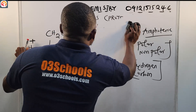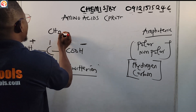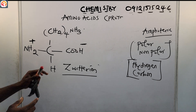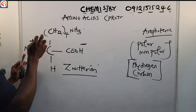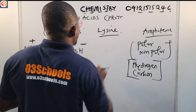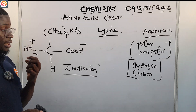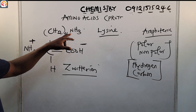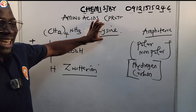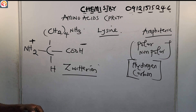If the R group is CH2NH3, it is called lysine. Lysine is polar because it is bonded to nitrogen. This is a basic amino acid.